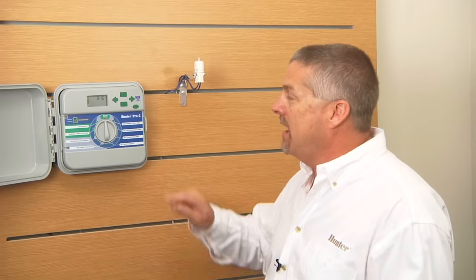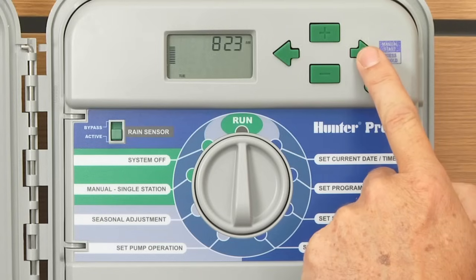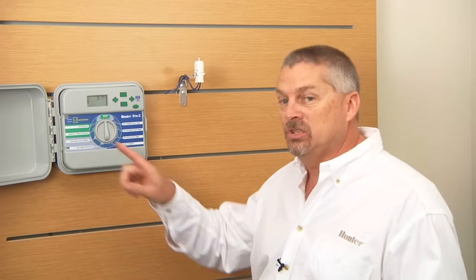The first way is under manual single station. The other way to operate a station is under manual all stations. This controller has the manual all station here with the right arrow. The manual single station feature is just for one station only. Now here's the key part.